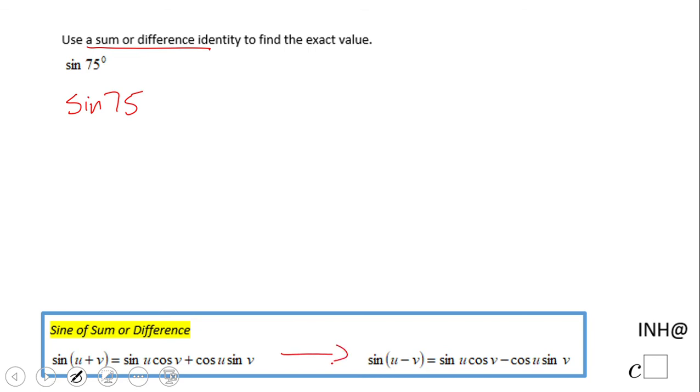The question now is how I'm going to rewrite sin 75° using angles like 30 degrees, 45 degrees, the ones that we know the sine and cosine values for. Obviously one way, I mean I think the only way in this moment,